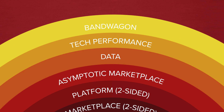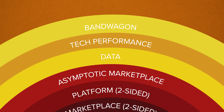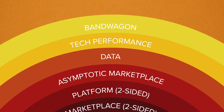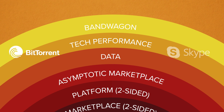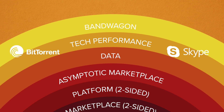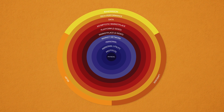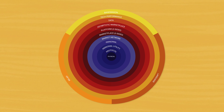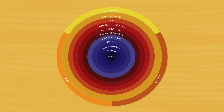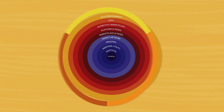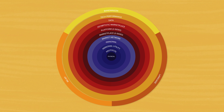We move into the orange area — that's data network effects, and there are many different types. Further out, we get to what we call tech performance. Think of BitTorrent or Skype, where the more nodes on the network, the faster the network moves. Then when we get to the outer rim, those yellows, we're looking at social network effects, which are the least powerful, but still very interesting.